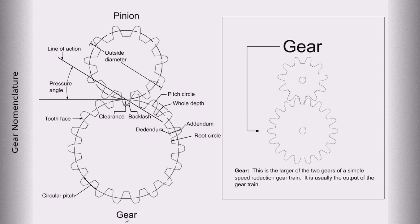Gear. This is the larger of the two gears of a simple speed reduction gear train. It is usually the output of the gear train.